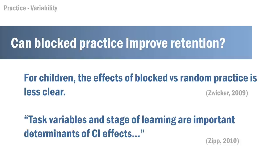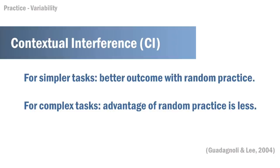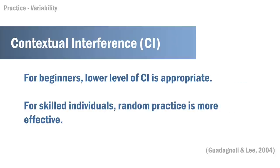For children, the effects of blocked versus random practice are less clear. One research project with children performing a frisbee toss found that blocked practice showed a benefit for retention and transfer, suggesting that task difficulty and the child's stage of learning need to be considered. For simpler tasks, random practice seems optimal, whereas for highest-difficulty tasks, random practice is less optimal. For beginners, a lower level of contextual interference is more appropriate, and for highly skilled individuals, random practice is more effective.